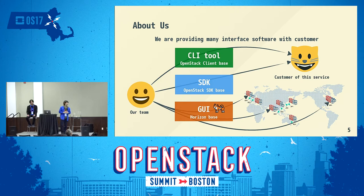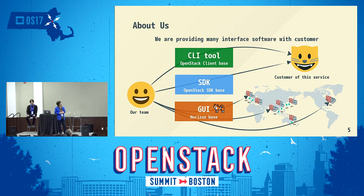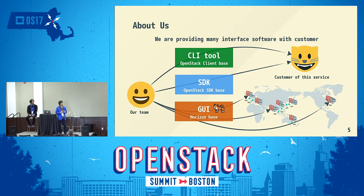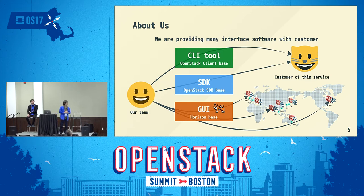Our team's primary mission is development using Horizon, but we are also providing a command line interface tool and SDK for this service — so we are an interface software development team. Basically, we are using OpenStack software for these three tools. Our CLI tool is a customized version of the OpenStack command, and our SDK is a customized version of the OpenStack Python SDK. We also have responsibility for software release management, especially for the GUI. Since the service is available in eight regions, our GUI is also located in every region, requiring us to release the GUI about once per month or more.